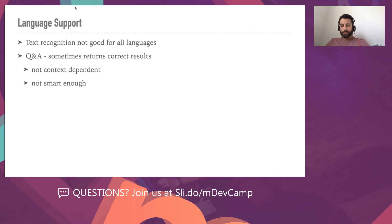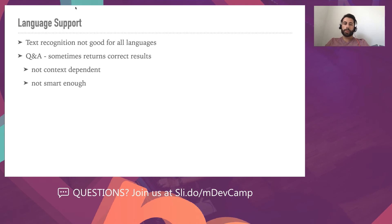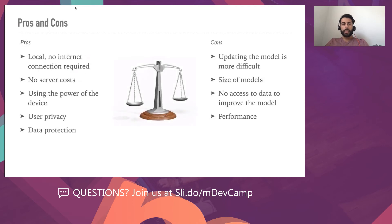Regarding other languages: text recognition doesn't work very well for all languages. For example, my native Macedonian language doesn't produce very clean data and can have strange characters. For the Q&A model, it sometimes returns pretty correct results — at least giving you the sentence where the answer might be — but it sometimes lacks context and isn't smart enough. However, it's surprisingly okay overall.